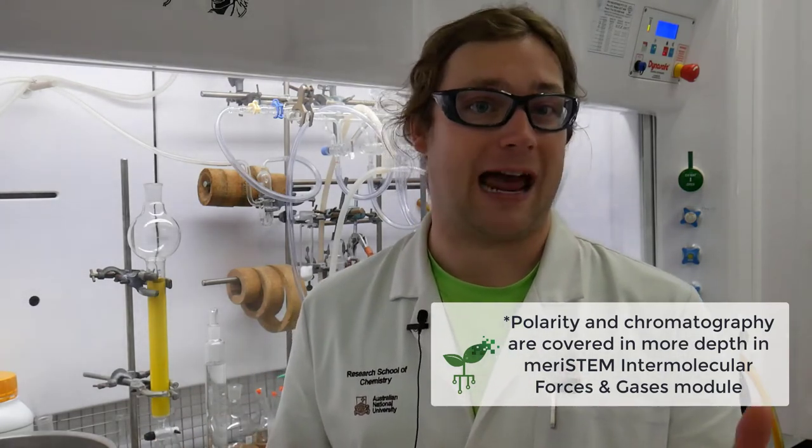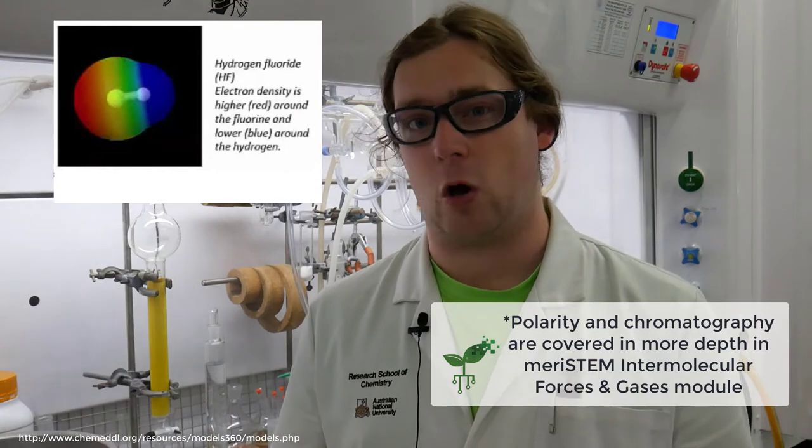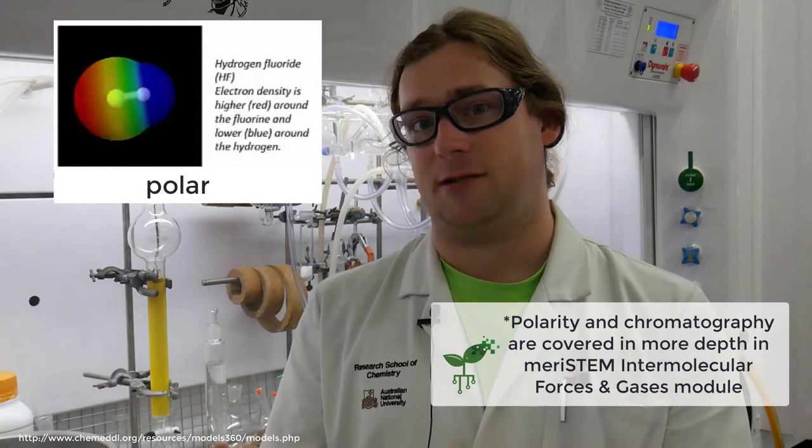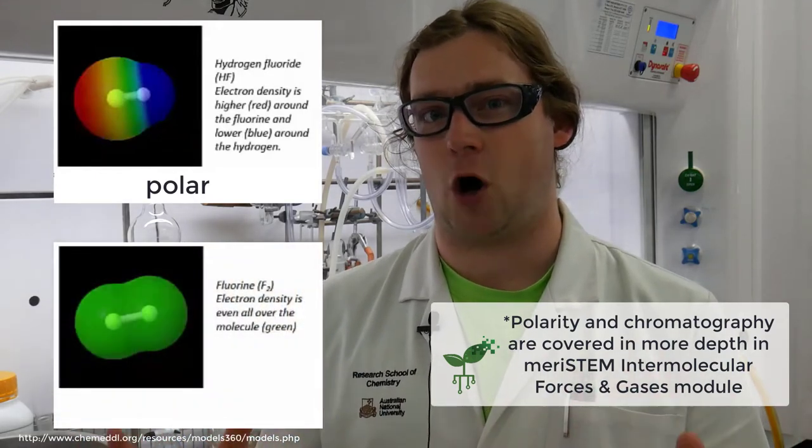If there's one half of the molecule that has most of the electrons and another half that doesn't have many at all, then that is a very polar molecule. However, if the electrons are evenly distributed around the entirety of the molecule, then we say that this molecule is particularly nonpolar.